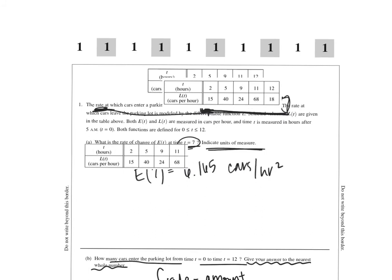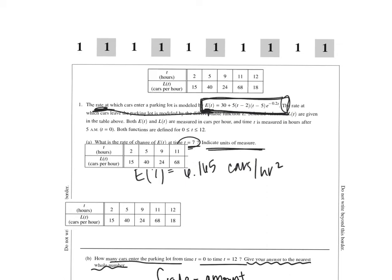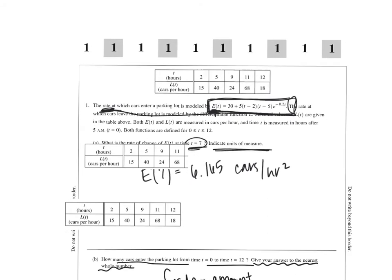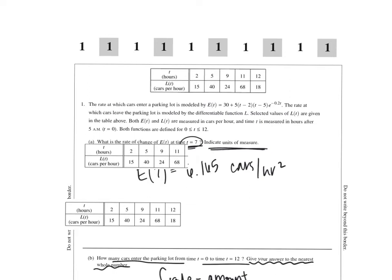This problem is talking about the rate that cars enter a parking lot, and the rate at which they leave the parking lot is shown in the table. The rate that they're leaving the parking lot is shown in the table, and that's what we took the trapezoidal sum of. They gave us the information about the rate that cars were entering the parking lot.